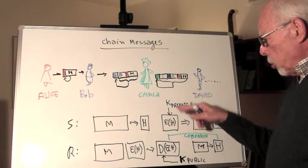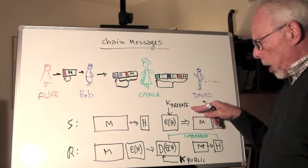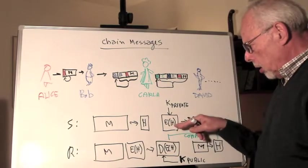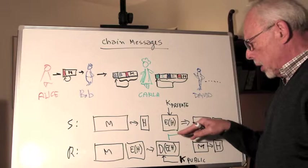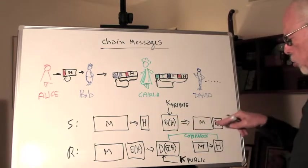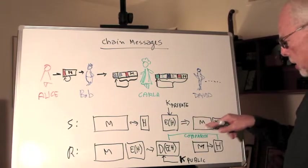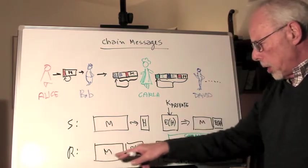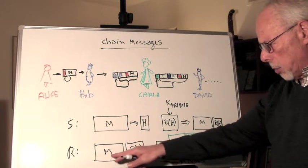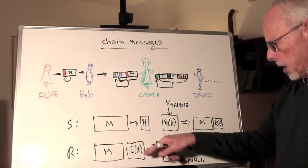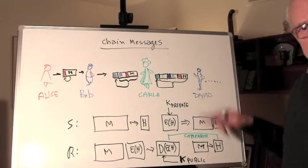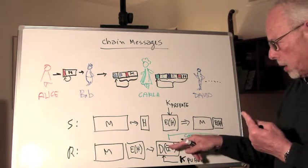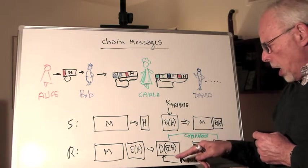But instead of attaching the hash itself to the message, the sender uses his private key or her private key to encrypt the hash. And the result of the encrypted hash is then attached to the message. The message plus the encrypted hash goes to the recipient. The recipient got it, the message and the encrypted hash, takes the encrypted hash, uses the public key of the sender to decrypt the hash and get back the hash.